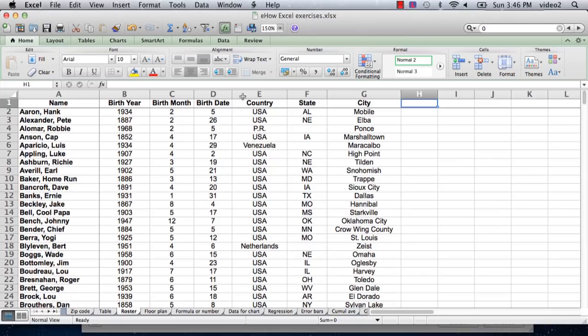Let's say we wanted to add a column. Since these are baseball players, we'll put it over here in column H or cell H1. Just click on the cell and then start typing, and we're going to type 'position'.